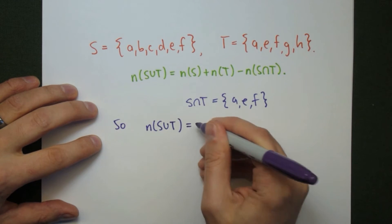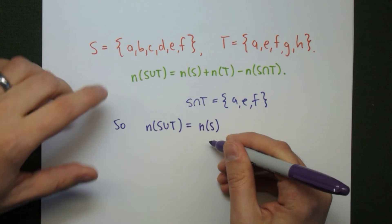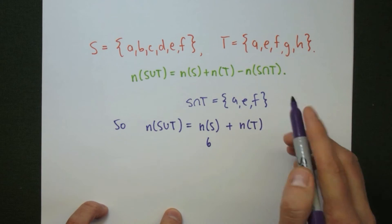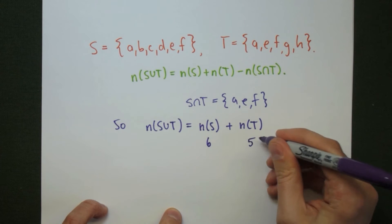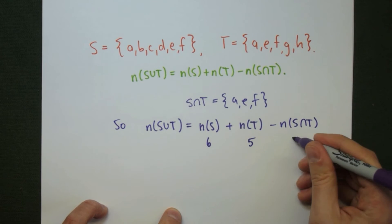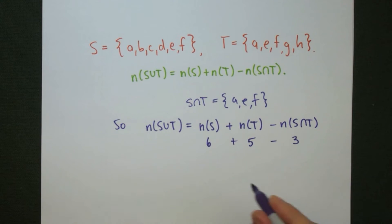So the number of elements in S union T has to be the number of elements in S, which is 6, plus the number of elements in T, which is 5, minus the number of elements in the intersection, which is 3. So 6 plus 5 minus 3 is going to give us 8 elements.